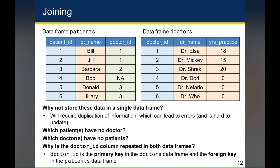The questions you might ask when you have these two data frames are: which patients have no doctor, and which doctors have no patients? You'll also notice that the doctor ID variable is present in both the patient's data frame and the doctor's data frame. In the doctor's data frame, the doctor ID is the primary key. Whereas in the patient's data frame, the doctor ID is the foreign key and the patient ID is the primary key.